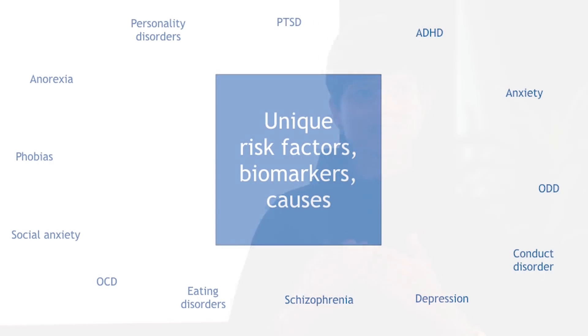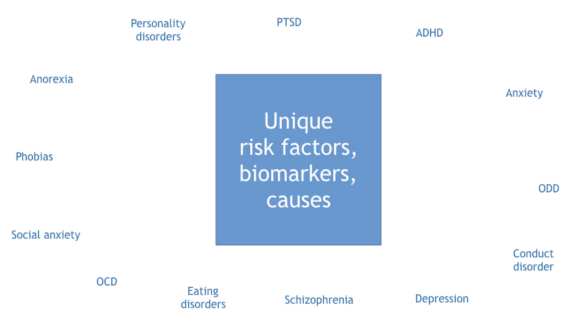Now you might be wondering why these diagnoses don't give us any information about the why. And this is where my research sits. I am interested in the development of mental health problems, but also understanding the risk and protective factors and the causes of mental health problems. For the most part, scientists — or us researchers — study mental health problems in the silos that correspond to these different diagnoses. So some people study depression, others study schizophrenia, and so on. But when we take a step back and try to look at what we've discovered about the possibly unique risk factors, biomarkers, and causes of these different disorders, what we find is there aren't any.